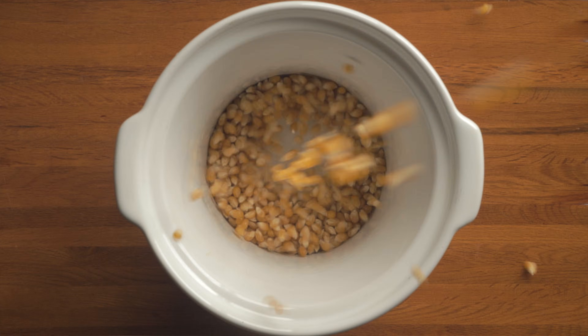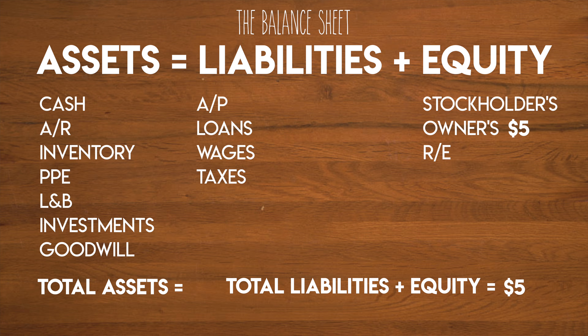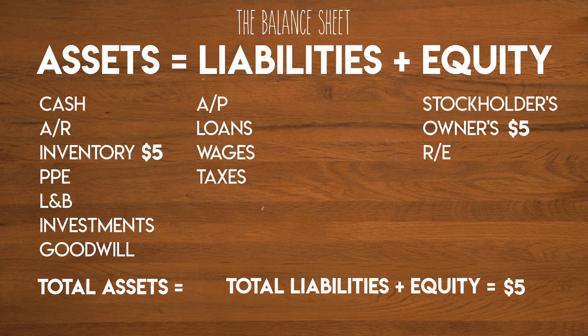So at the beginning of this video I promised you a couple of examples, so here we go. If I head down to the shop and spend $5 on corn, then I no longer have $5 in cash but I now have $5 of inventory. The categories have now changed but my total assets stay the same. My balance sheet is in balance.